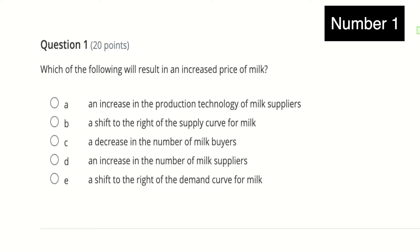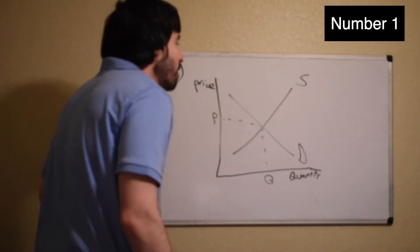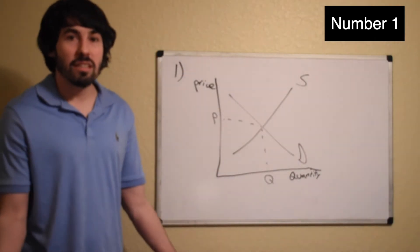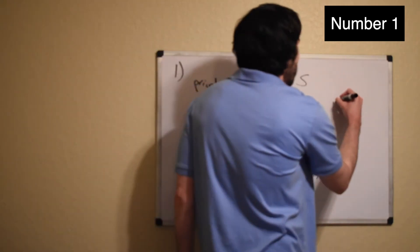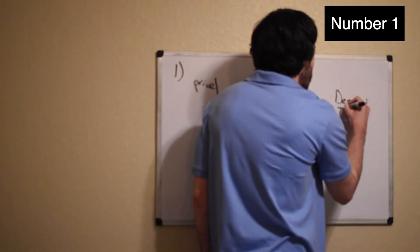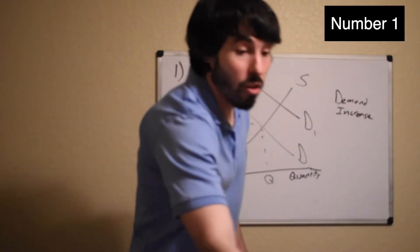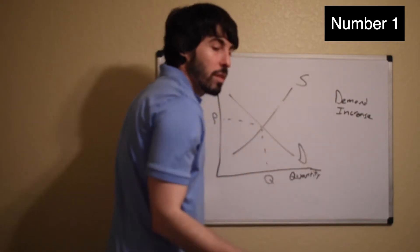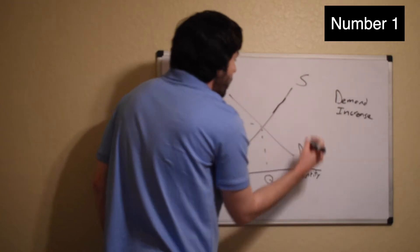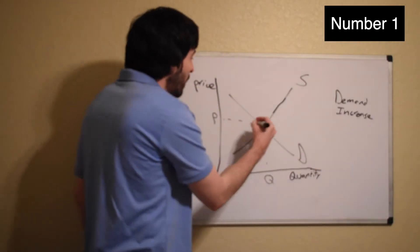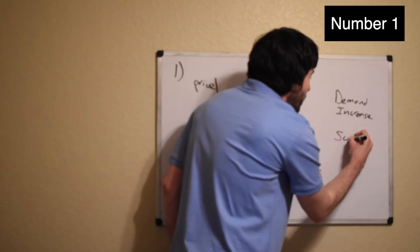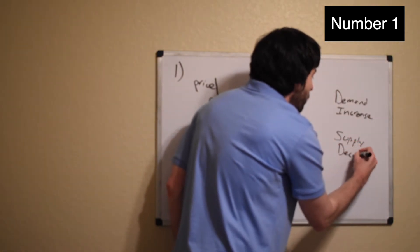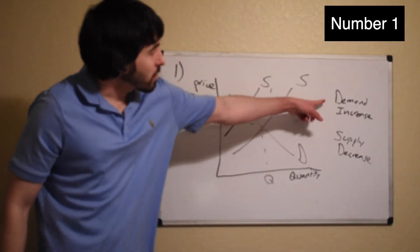Number one asks: which of the following will result in an increased price of milk? First, think about the two ways that prices can go up. One is if demand shifts to the right — that would be demand increasing. The other way for price to go up is for supply to decrease. If supply decreases it would shift to the left and the price would go up. So you need either demand to increase or supply to decrease.